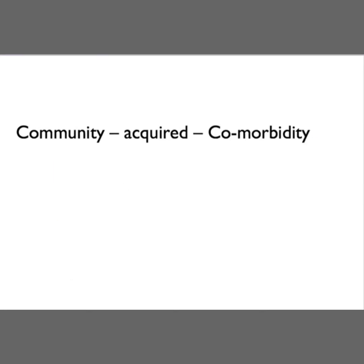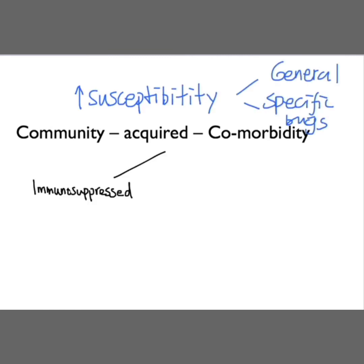What about patients with community acquired pneumonia who have a comorbidity? They are also subjected to all the organisms we talked about before. However, their comorbidities might mean they are either more susceptible to infection in general, or more susceptible to certain organisms. For patients who are immunosuppressed, it depends on why they are immunosuppressed. Patients with HIV are more likely to get PCP pneumonia and TB. Those without a spleen are more susceptible to encapsulated organisms such as Strep. Those immunosuppressed because of medications such as chemotherapy drugs and steroids are more susceptible to general infection.